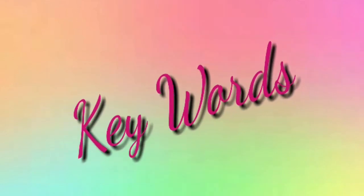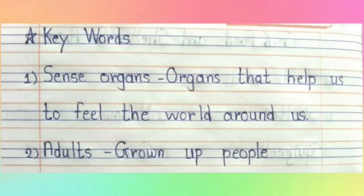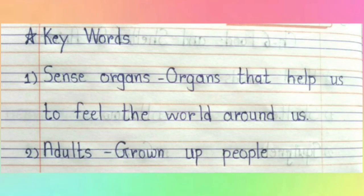Now let's learn the keywords. First keyword is sense organs. S-E-N-S-E-O-R-G-A-N-S. Sense organs, yaani ki, indriyo. The meaning is: organs that help us to feel the world around us. Yaani ki, humare body mein jho organs hain, jho hume humare aas-pas ki duniya ko feel karne mein help karte hain, unko sense organs bolte hai.